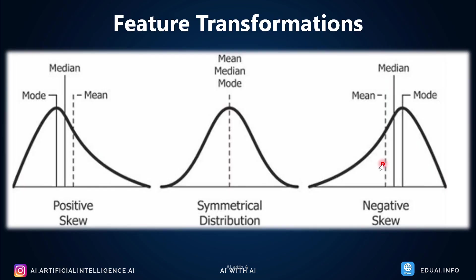Whenever you get data, it is always better to plot it to check if it is positively skewed or negatively skewed. Positive or negative skewness means the data is biased. What we want is a symmetrical distribution of the data — where mean, median, and mode generally fall on one line. This is what we are aiming for.